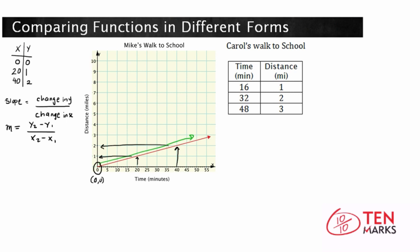So if we take any two points on the line, let's look at 20 comma 1 and 40 comma 2, then we should be able to calculate the slope of the line. Let's do 2 minus 1 over 40 minus 20, and that gives us 1 over 20 for the slope.